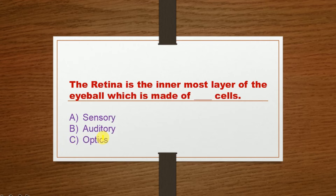Next question: The retina is the innermost layer of the eyeball which is made of dash cells. Option A: Sensory cells, Option B: Auditory, Option C: Optic. The correct option is Option A: Sensory cells.